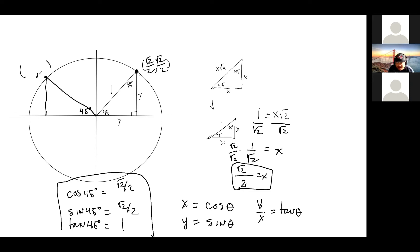What is negative? The x coordinate is negative. So this is negative root two over two, and this is also root two over two.